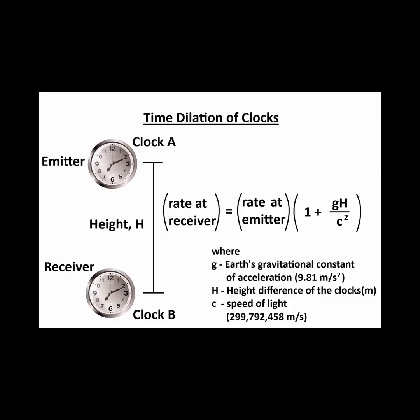We can express this rate difference as: the rate at the receiver is equal to the rate of emission times 1 plus Earth's gravitational constant of acceleration, g, times the height difference of the clocks, H, divided by the speed of light, c, squared.